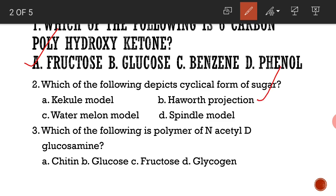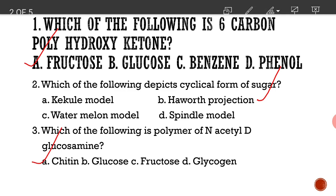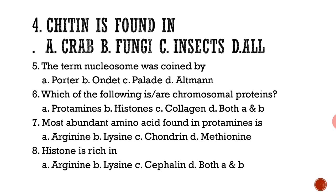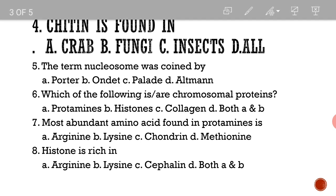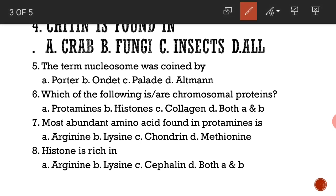Which of the following is a polymer of N-acetyl-D-glucosamine? The answer is chitin. Chitin is found in crabs, fungi, and insects — that is, all of the above.